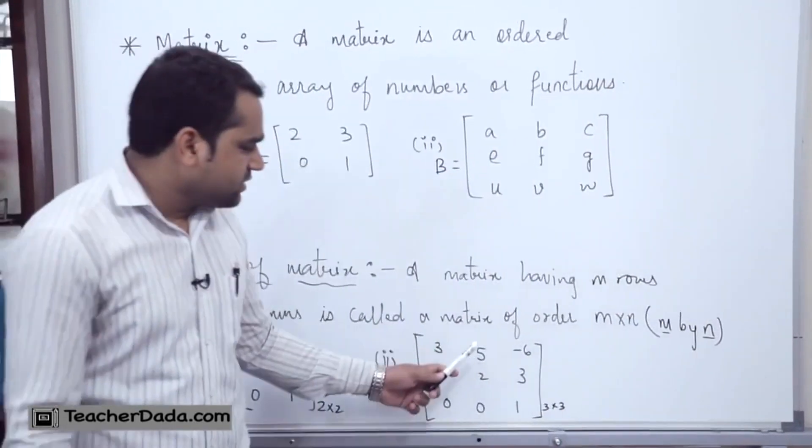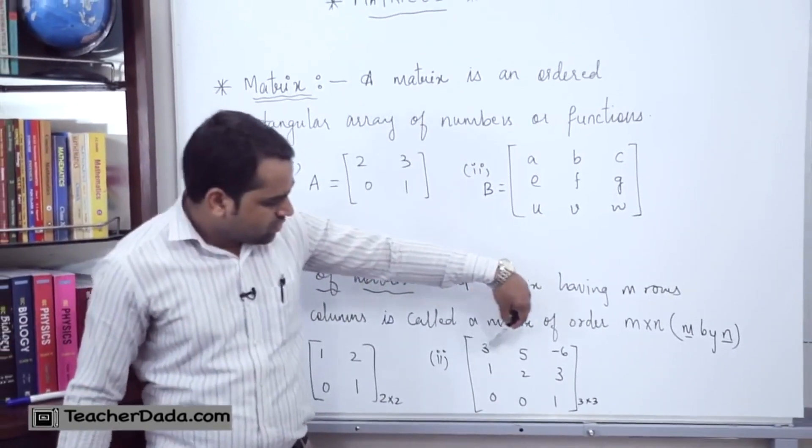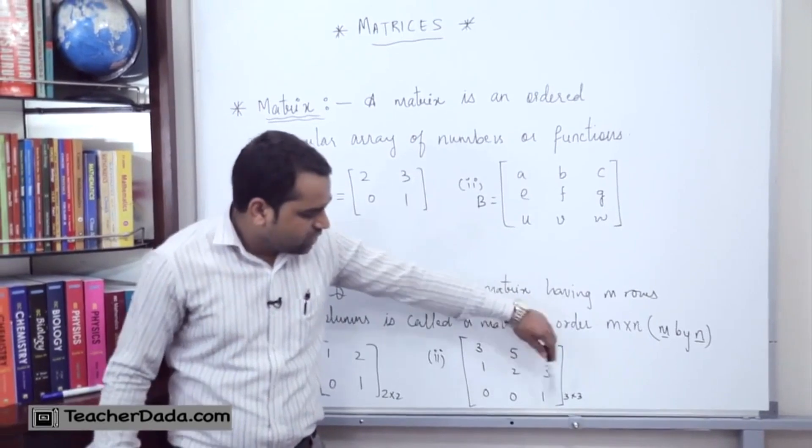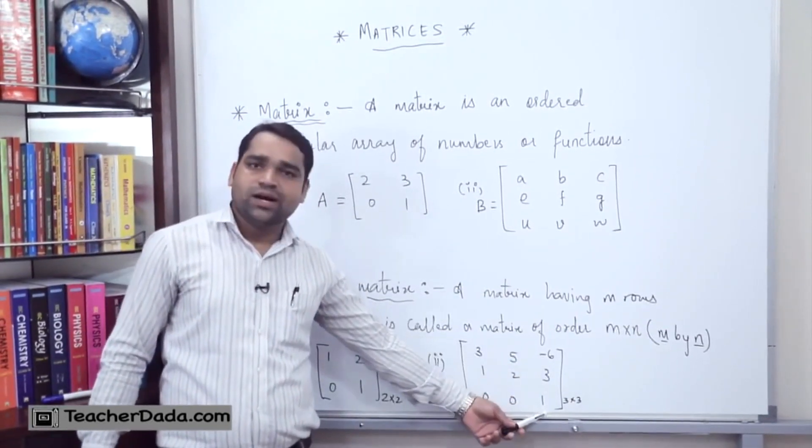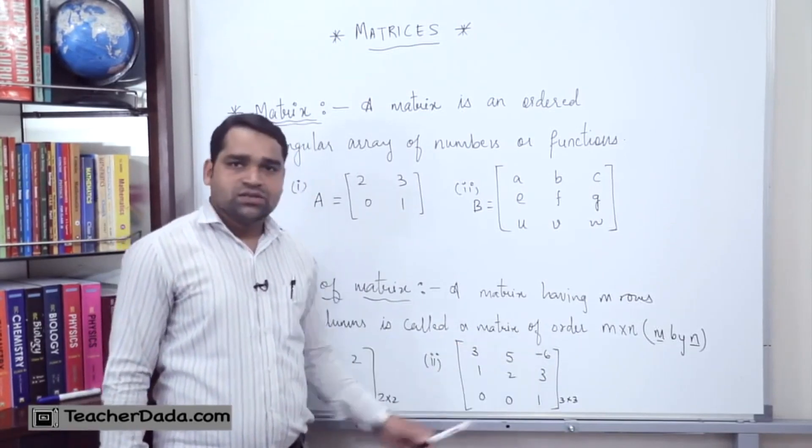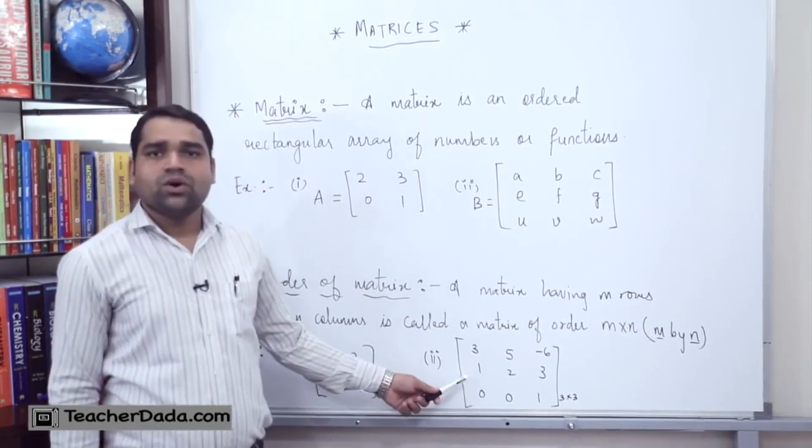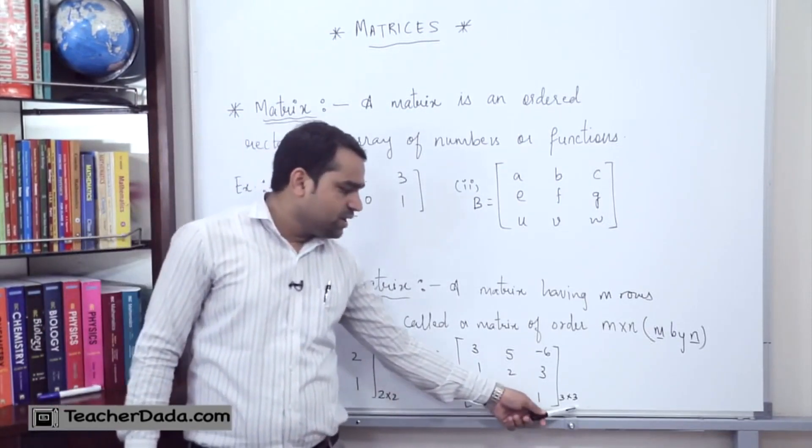Similarly, you can see in the next example, example number two. We have here number of rows: one, two, three. If you want, you can give this as R1, R2, R3, and for columns C1, C2, C3. So we have a total here of three rows and three columns. That is why the order of this matrix is three by three.